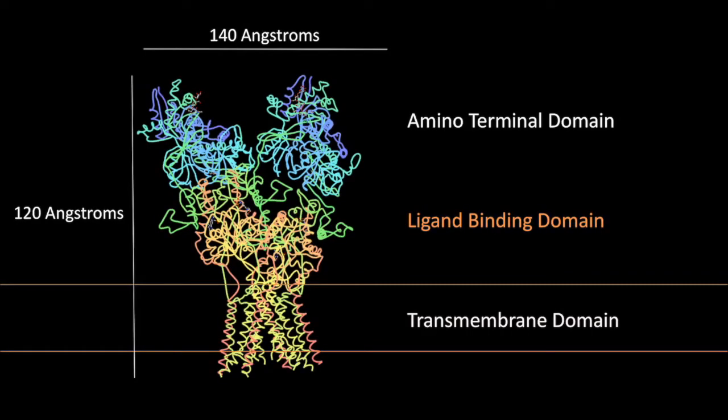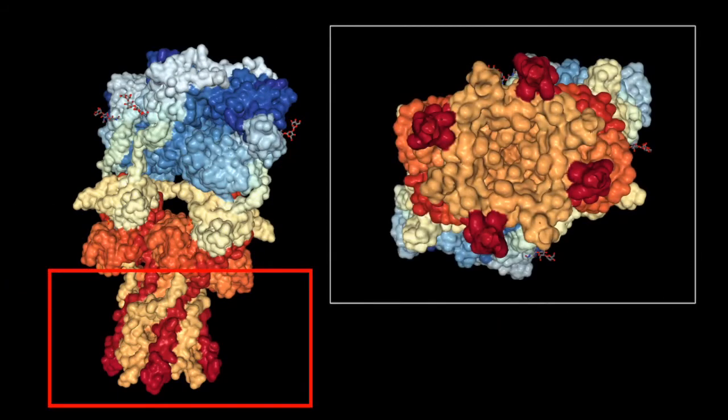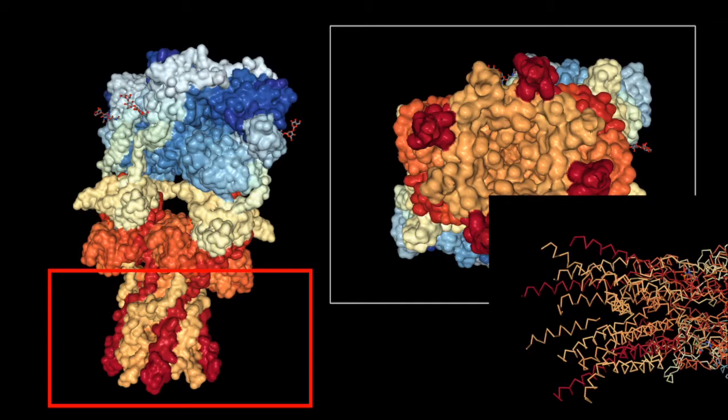Next, the transmembrane domain. As you see, alpha helixes create a tunnel for ions to go through. This concludes the transmembrane domain.